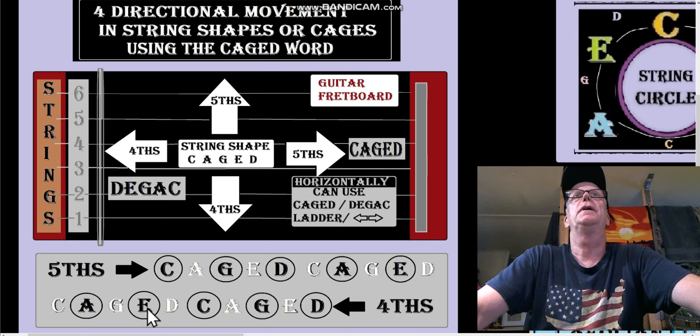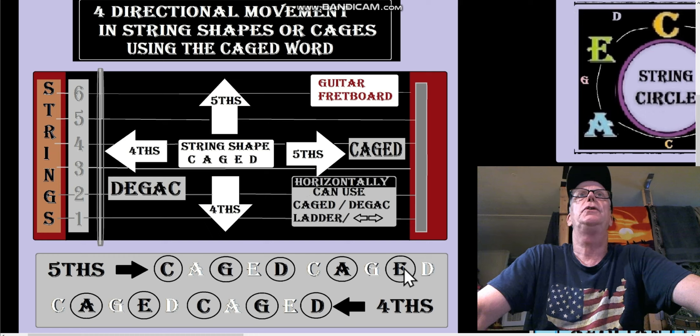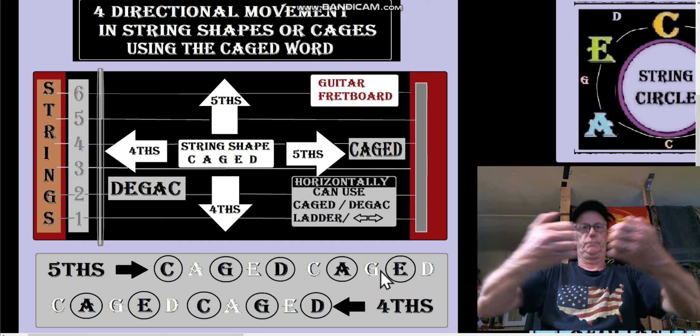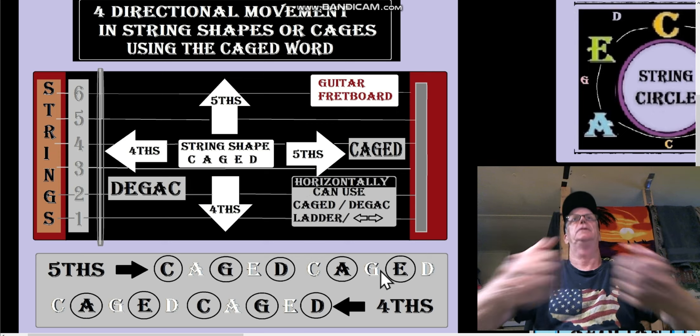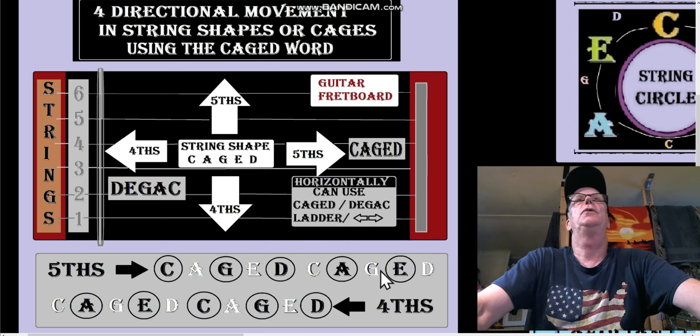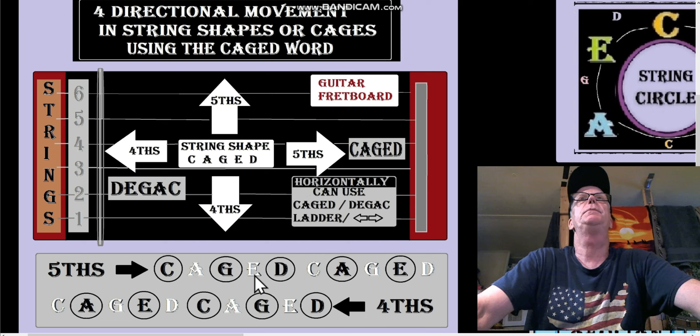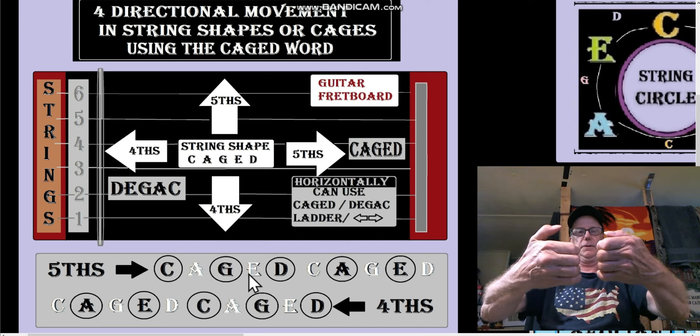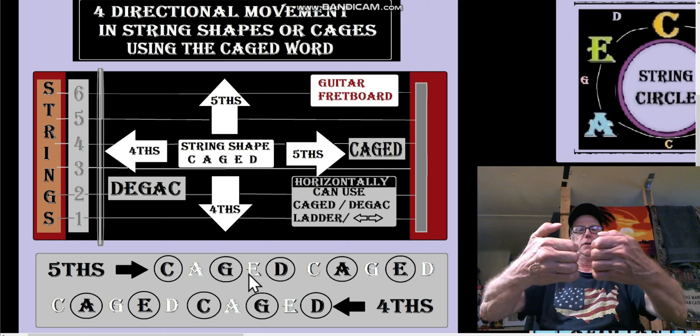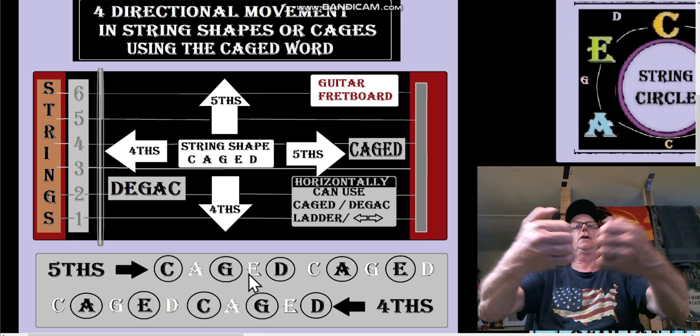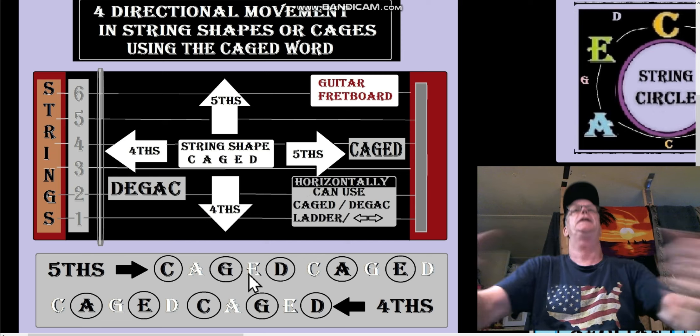If you do anything in CAGED, you have note sharing. If you do it in fifths, no note sharing. The only thing is between E and C and C and E there's the missing fret, so all the other four are actual borderline neighbors like that.